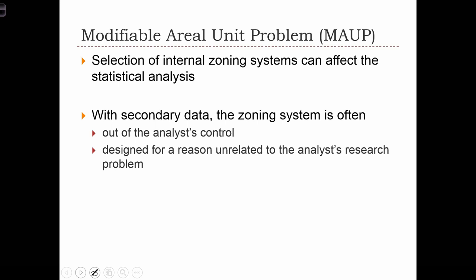The modifiable areal unit problem, the MAUP, also has the problem of selecting internal zoning systems. Because even for any given level of aggregation scale, we can still decide to redistrict the zones inside that zoning scale in any way we like. And with secondary data, the zoning system is often out of the analyst's control.